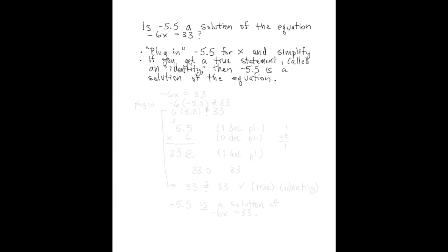Let's rewrite our equation first. So we have -6x equals 33. Now that equation is given to us as true. What we're trying to figure out is, is -5.5 a solution? So let's plug in -5.5. This gives us -6 multiplied by -5.5 equals 33.